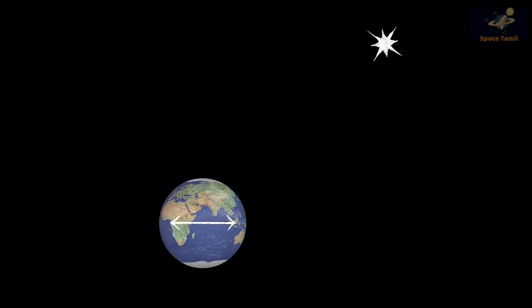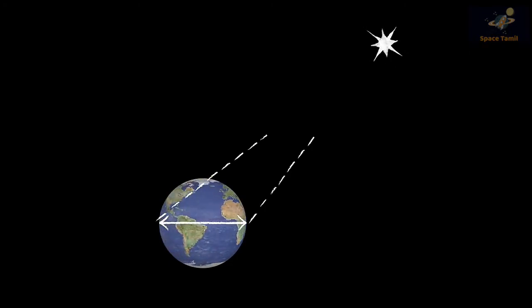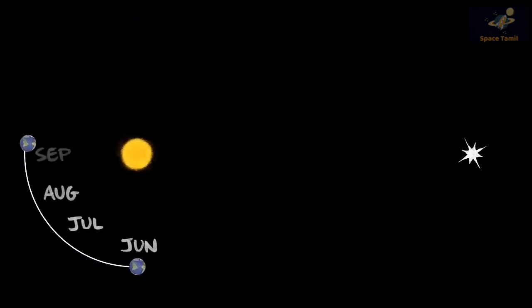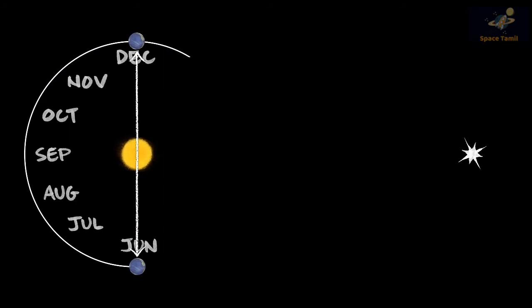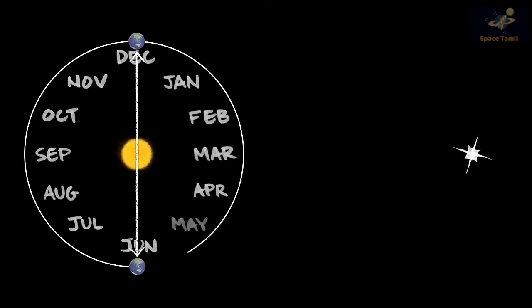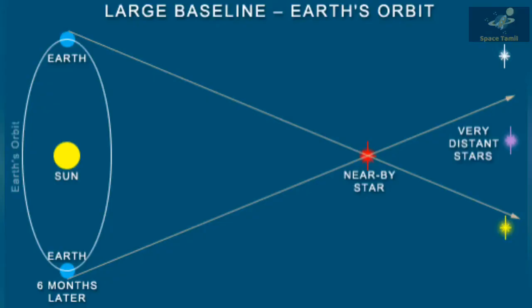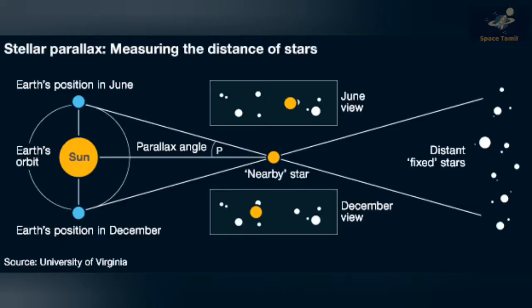We are going to be able to find a star. We will be able to find a star in June. We will be able to find a diameter. We can measure a triangle.